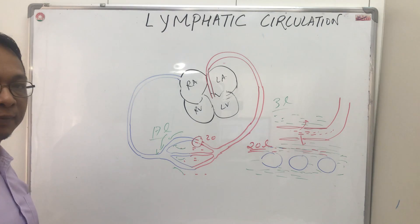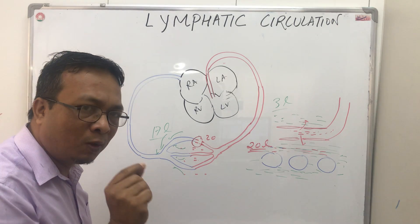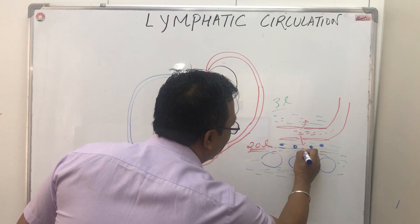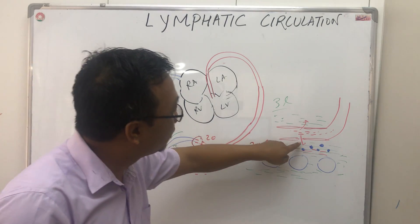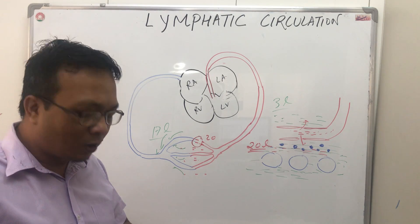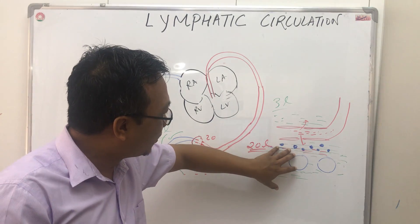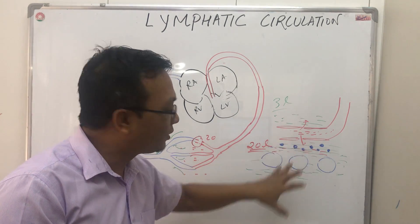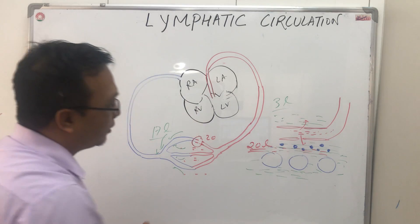Along with this fluid that is leaking out, there are also small amounts of proteins leaking — not the big protein molecules, but small amounts of protein molecules are also leaking into the interstitial space. Proteins are responsible for oncotic pressure; proteins always have a capacity to retain fluid. So if the protein content is increasing over time, it will retain fluid in the interstitial space, and there will be a chance of developing edema.